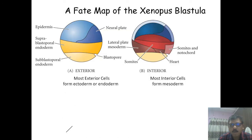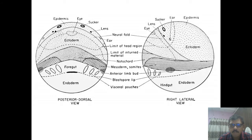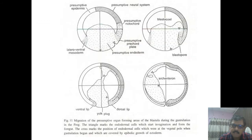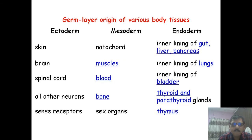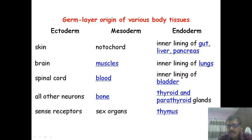This is the fate map of the Xenopus blastula or the frog blastula, where the mesoderm, endoderm, and ectoderm are formed and their fate is decided. The ectoderm gives rise to the skin, brain, spinal cord, all other neurons and sense receptors. The mesodermal area forms the notochord, muscles, blood, bone, and the sex organs. The endodermal area forms the inner lining of the gut, liver, pancreas, inner lining of the lungs, inner lining of the bladder, thyroid, and parathyroid.